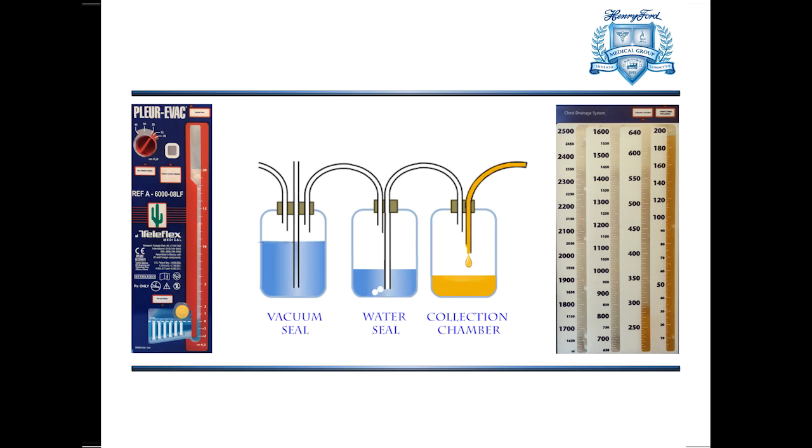The third bottle in the thoracic surgeon's three-bottle system was a bottle that was used to set the level of suction. The level of suction at the wall was always set at a maximal level, and the suction was controlled by the level of fluid within the third bottle. This suction level is usually used in units of centimeters of water simply because that's how you would measure the filling of the bottle.